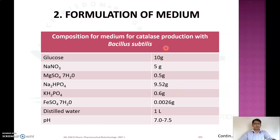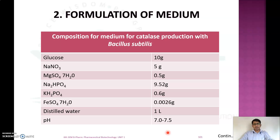The composition of culture media for catalase production using Bacillus subtilis is: glucose 10 g, sodium nitrate 5 g, magnesium sulfate 0.5 g, sodium hydrogen phosphate 9.52 g, potassium hydrogen phosphate 0.6 g, ferrous sulfate 0.0026 g, and distilled water up to 1 liter. The pH is adjusted to 7.0–7.5 and sterilized before use.